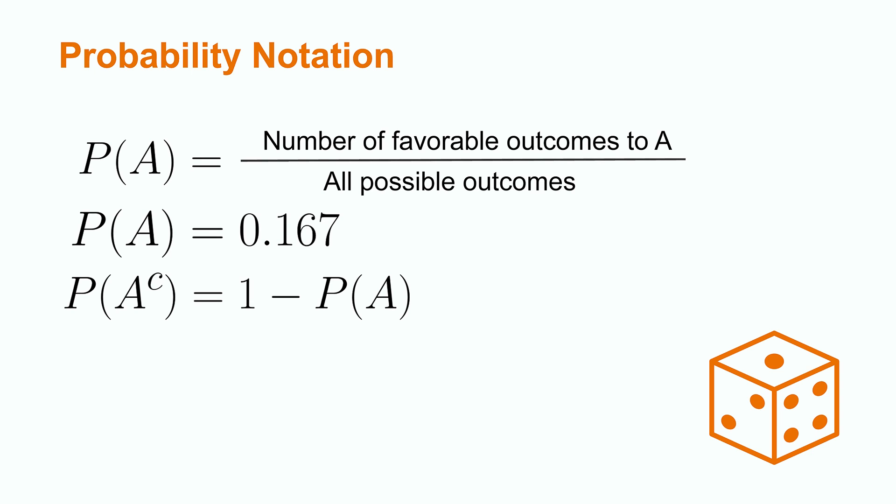To compute this, we would subtract 0.167 from 1, with 1 being the entire sample space. This gives us a value of 0.833.